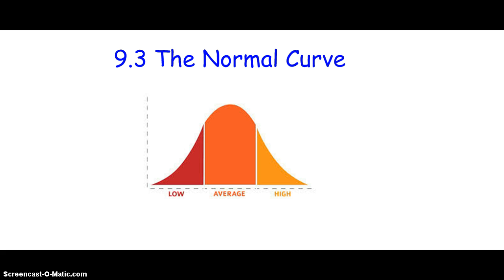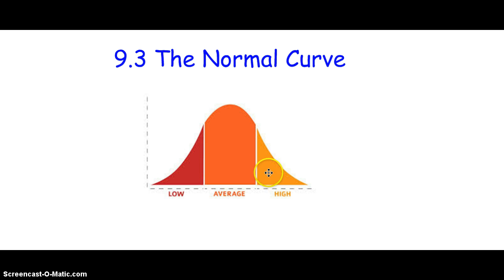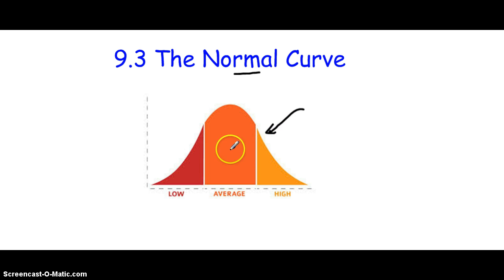The first thing to realize is that the normal curve is a bell curve, and the average of our data would be in this orange section. The values in the lower numbers would be in the red section, and the higher numbers above the average would be in this lighter yellow-orange section. A normal curve is what we expect our data to behave, and what this is showing is the probability.